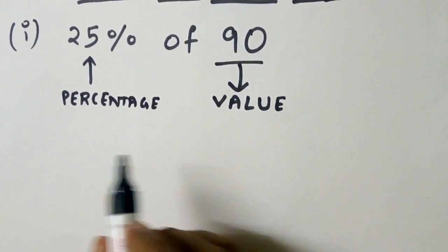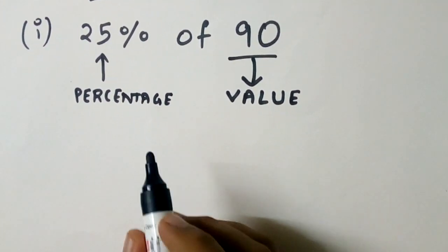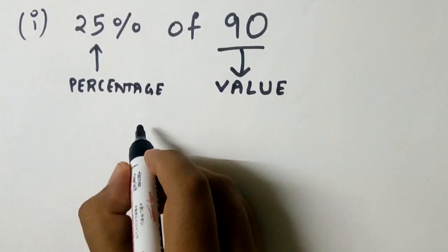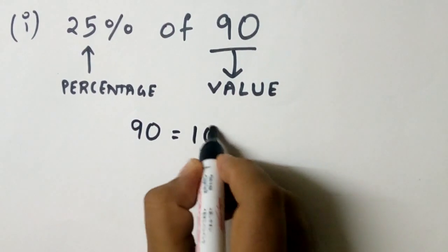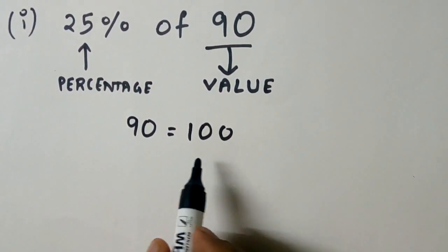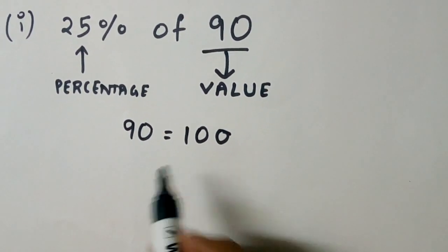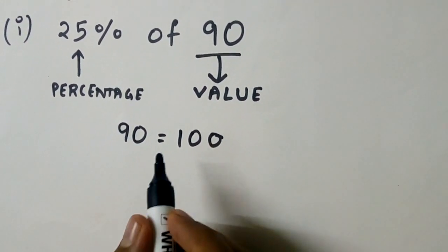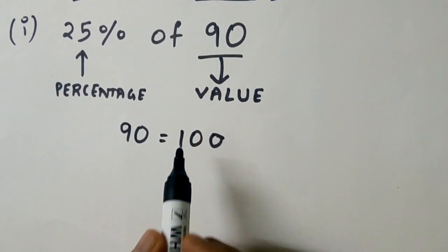Whenever we are given this kind of sum, the first step is to equate them. How will we equate them? Always equate the value given equal to 100%. So for us in this problem, the value 90 is equal to 100%, and what we are asked to do is find the 25% of that value.